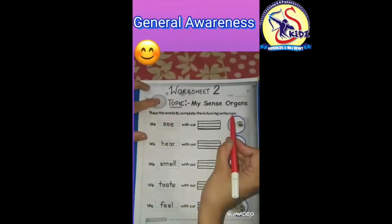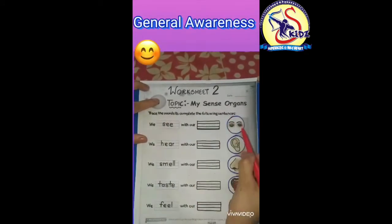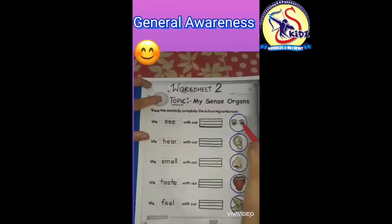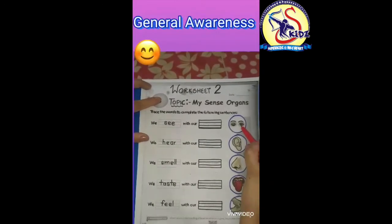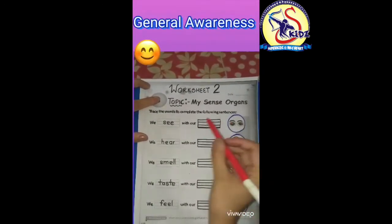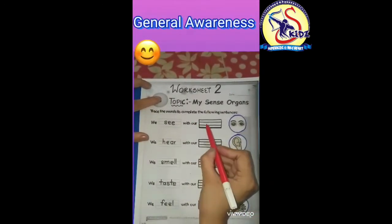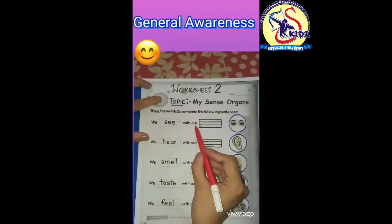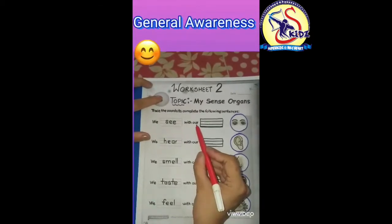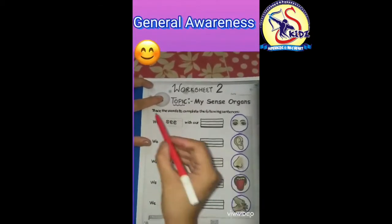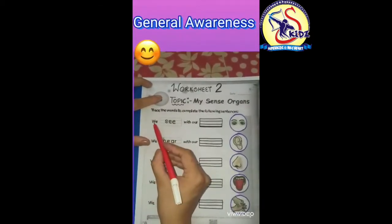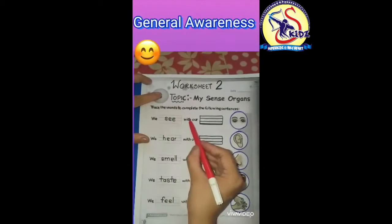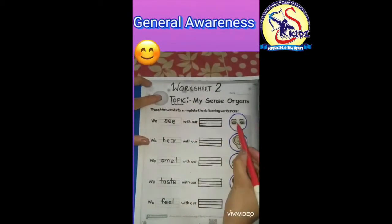The exercise is: trace the words to complete the following sentences. There are some pictures — you have to observe those pictures and then trace the word to complete the sentences. Let's start: we see with our...